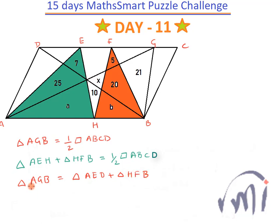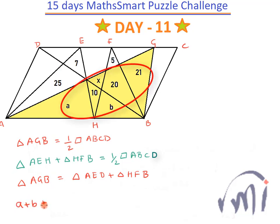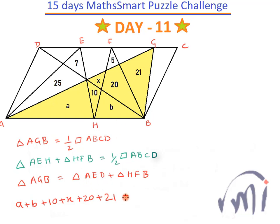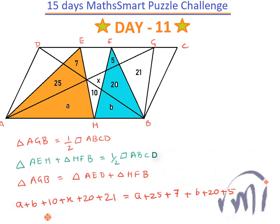Therefore, the area of triangle AGB equals the sum of the areas of triangle AEH and triangle HFB. The area of triangle AGB equals A plus B plus 10 plus X plus 20 plus 21. The area of triangle AEH equals A plus 25 plus 7, and the area of triangle HFB equals B plus 20 plus 5.